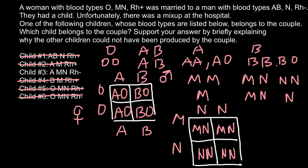Mother is Rh positive and father is Rh negative. Rh negative means the allele is defective and the surface protein is not produced — a protein normally present on red blood cells. In the mother it is present; she may have two positive alleles or one positive and one negative allele, but either way she is Rh positive. In other words, three genotypes are possible: positive/positive, positive/negative, and negative/negative.